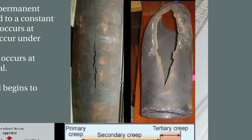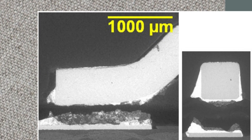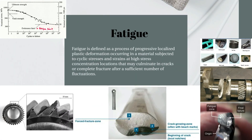These are further examples of Creep. Next, Fatigue. Fatigue is defined as a process of progressive and localized plastic deformation occurring in a material when it is subjected to cyclic stresses and strains. The cyclic stresses and strains create high stresses at stress concentration locations and eventually cause cracks or complete fracture of the component.